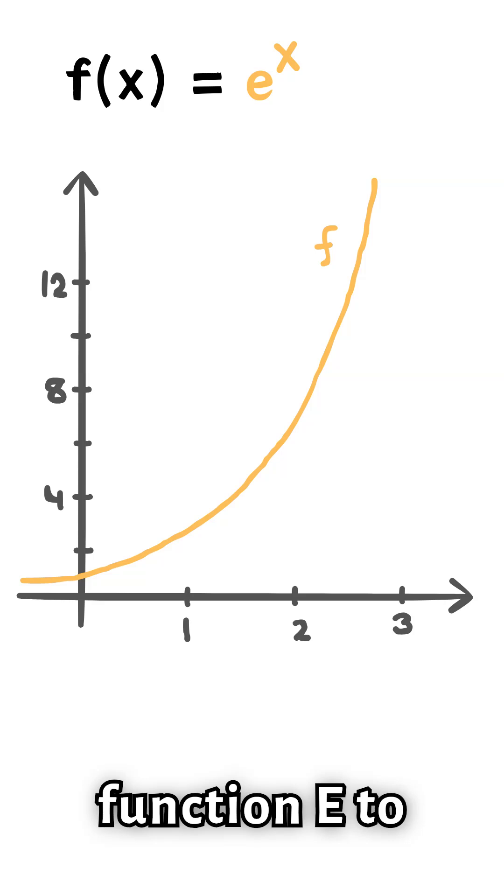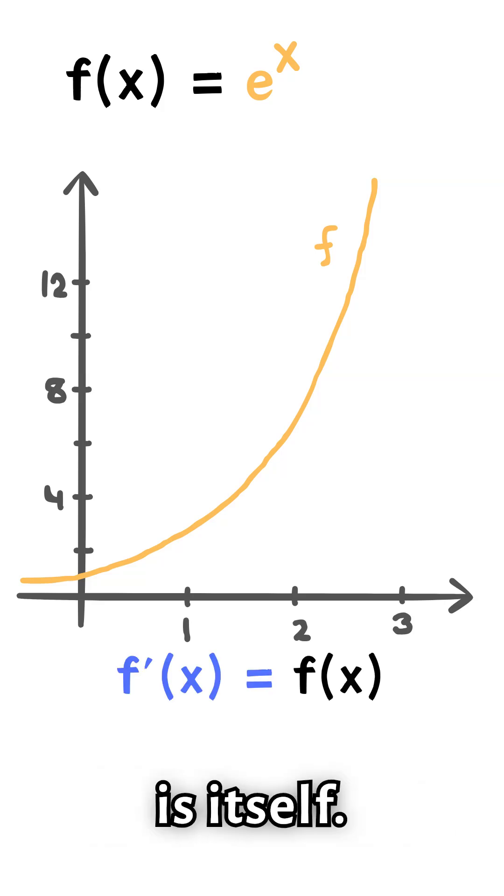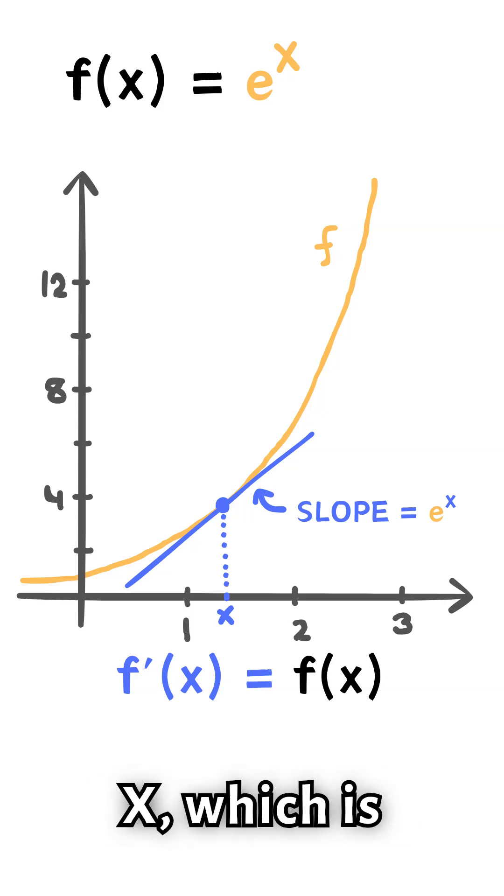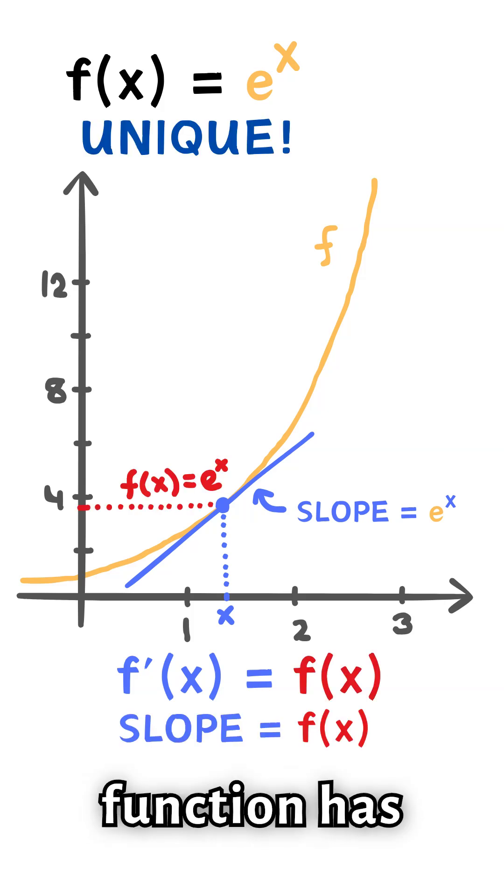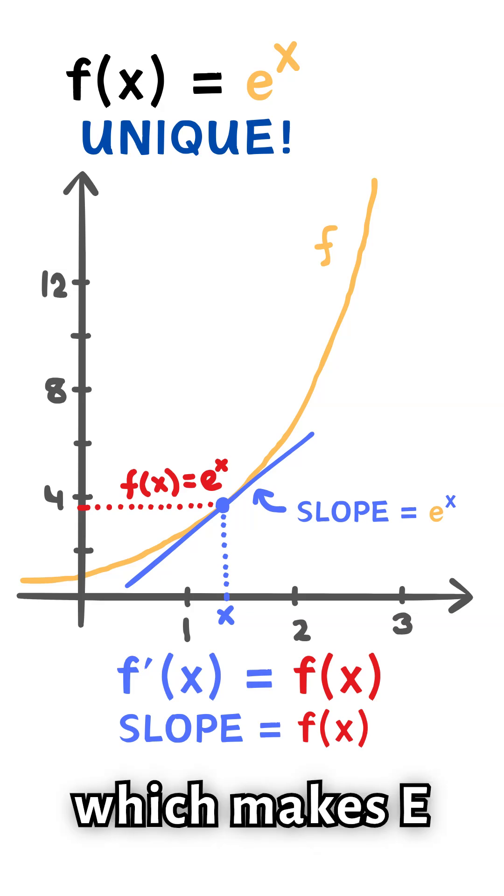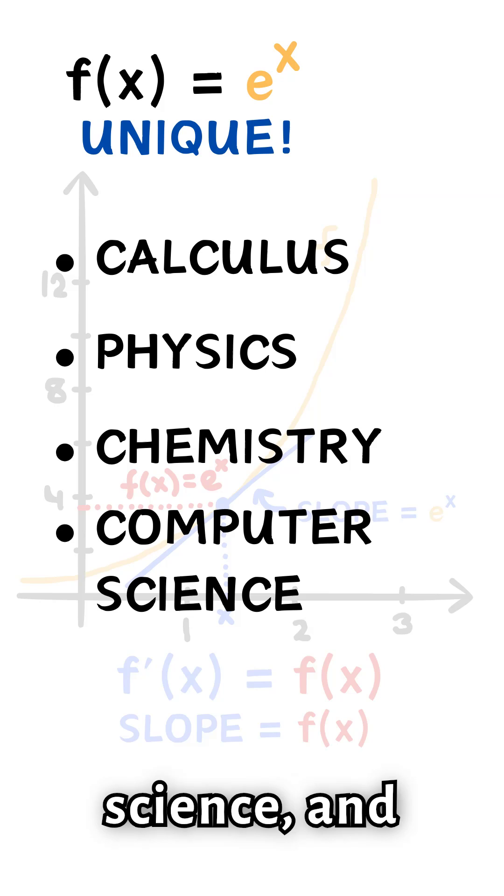The function e to the x is unique because its derivative is itself. This means that at any x, the slope of the tangent line is e to the power of x, which is the function's value at that point. No other function has this unique property, which makes e essential in calculus, physics, chemistry, computer science, and so much more.